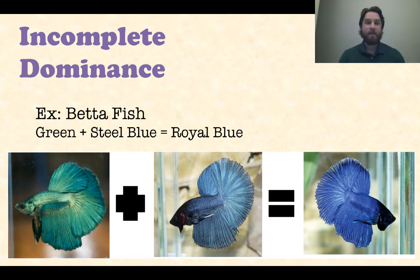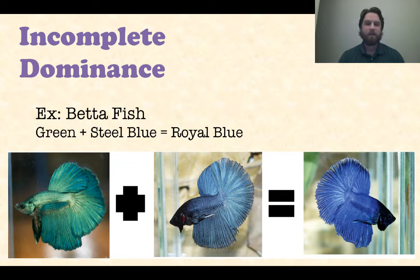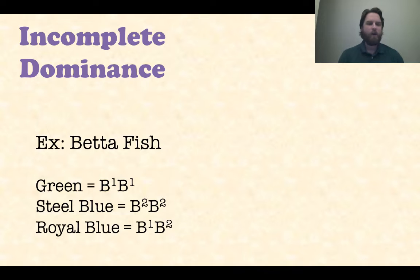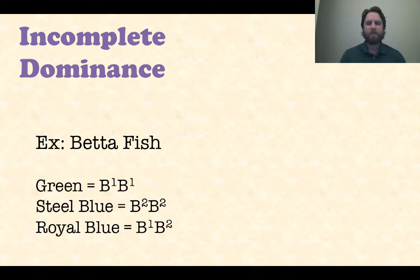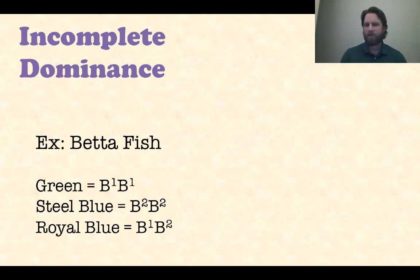If you look at our first example, the betta fish, there is a green betta fish and a steel blue betta fish — those are the parental colors. But if they mate and you get a betta fish with one copy of each allele, you don't get green or steel blue. You actually get an entirely different color — royal blue. So if you are a green betta fish, you have two dominant alleles denoted B1 B1, and steel blue has B2 B2. A royal blue is when there are two dominant alleles of the different color type.